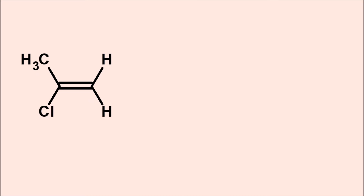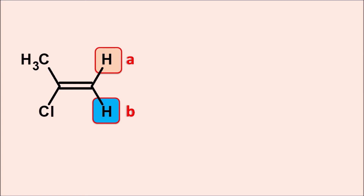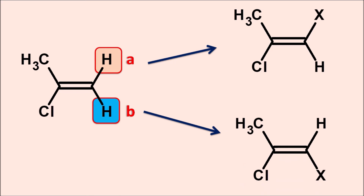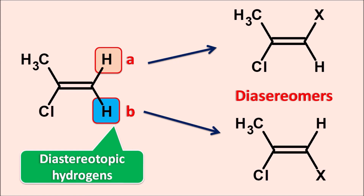Similarly, let us take another example — this is an alkene with two hydrogens. Let us label these hydrogens A and B. If A is going to be removed it gives one product, and if B is going to be removed it gives another product. You can observe that one is the E isomer and the other is the Z isomer. So both of these products are diastereomers. Therefore, these hydrogens are again diastereotopic hydrogens. In this way, diastereotopic hydrogens result in the formation of diastereomers when they are replaced with a different group.